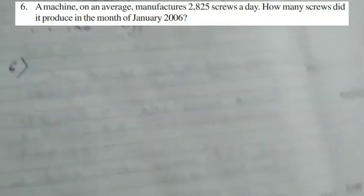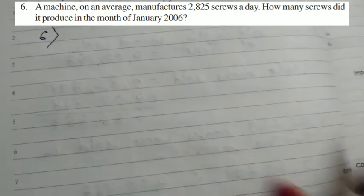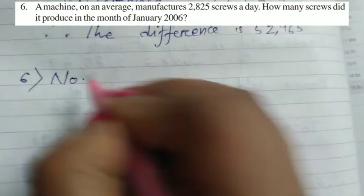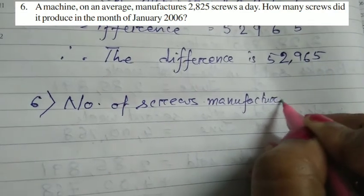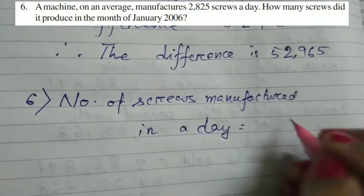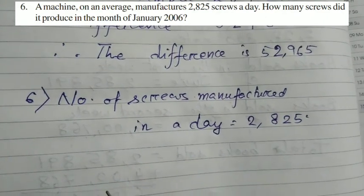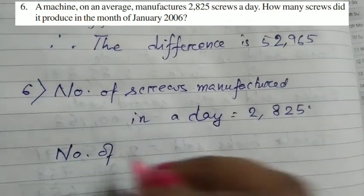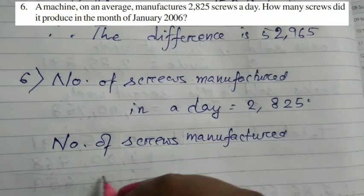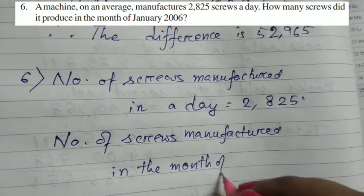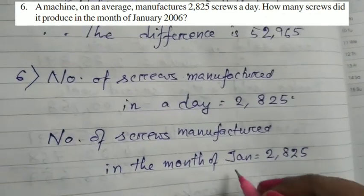Next, I will come to question number 6. A machine on an average manufactures 2,825 screws a day. Number of screws manufactured in a day is 2,825 screws in the month of January. Every day there is 2,825 screws.